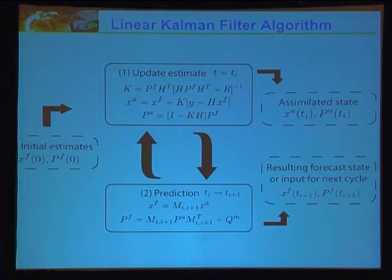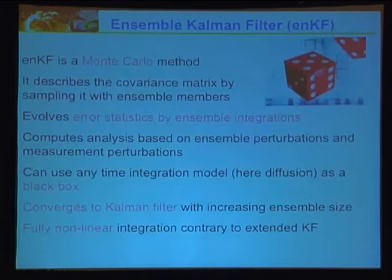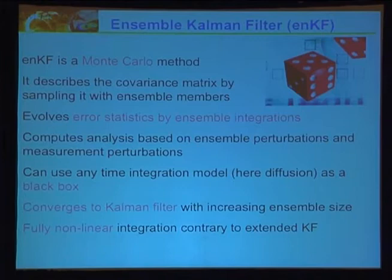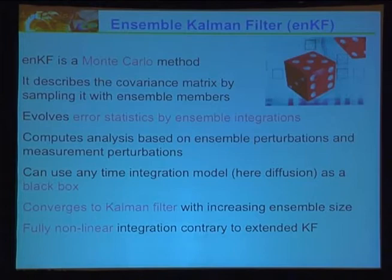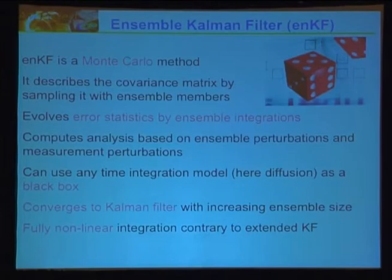In 1994, Evensen developed the ensemble Kalman filter, using a Monte Carlo approach to estimate the covariance matrix through an ensemble of model states. This took care of the expensive computation of evolving the model covariance matrix. You use an ensemble of model states to approximate your covariance matrix. It's a full nonlinear integration, contrary to the extended Kalman filter which still uses a linear evolution of the covariance matrix.